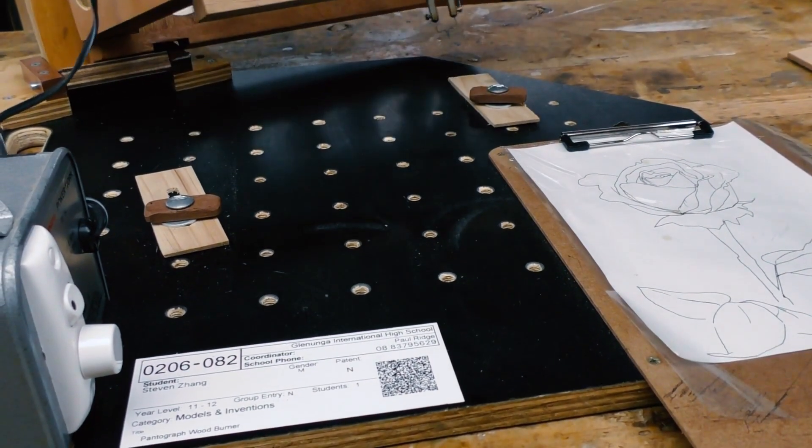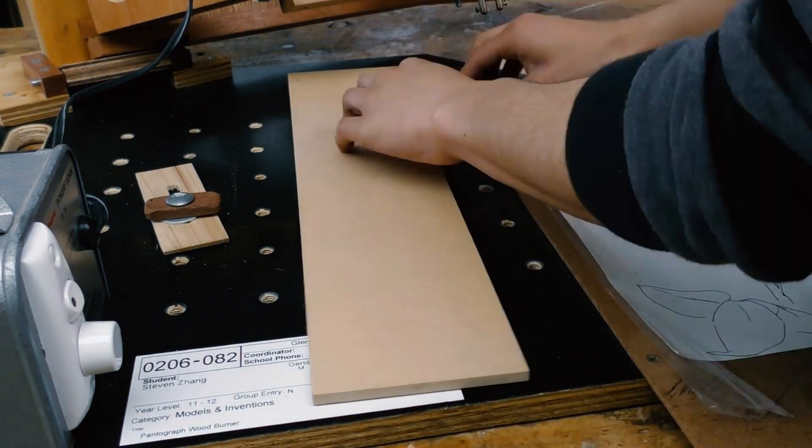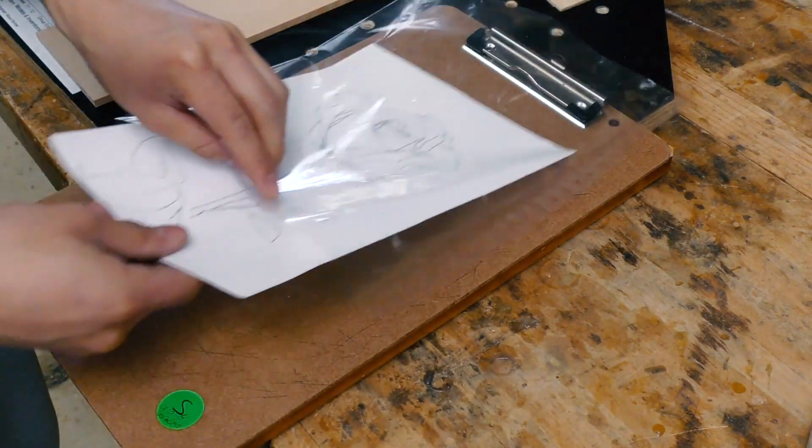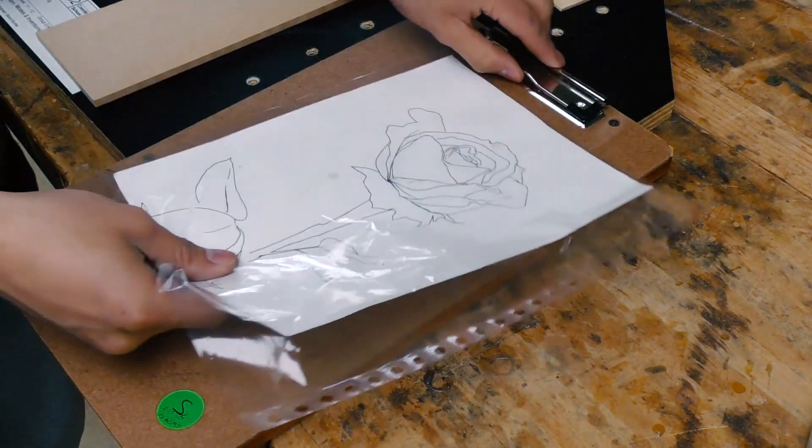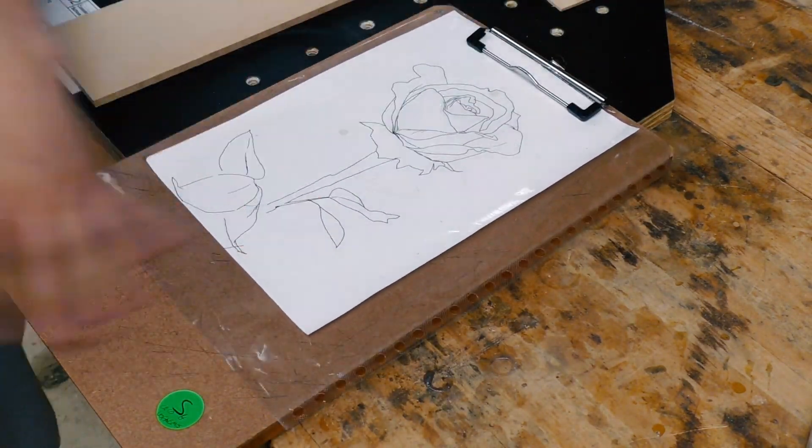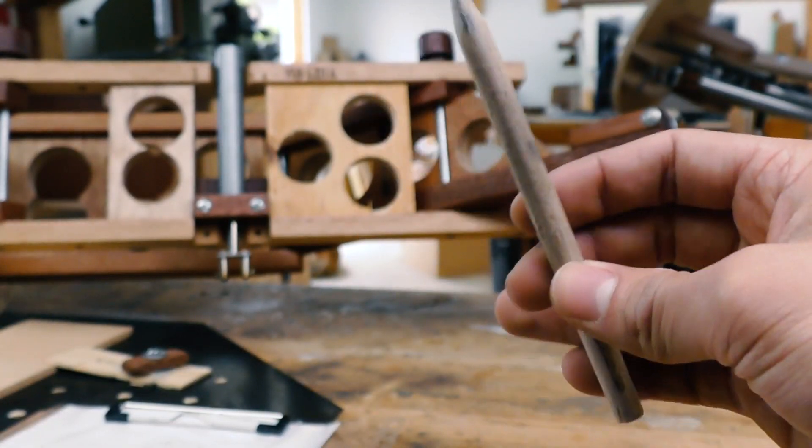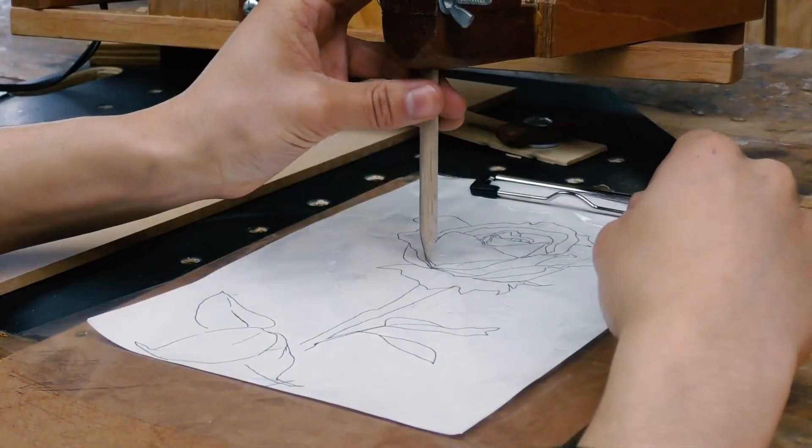one simply clamps the workpiece on a work table using the incorporated clamps. The pentagraph wood burner can use both 2D flat pictures and 3D contours as templates. For 2D flat templates, I have made a little wooden pen that can trace pictures.